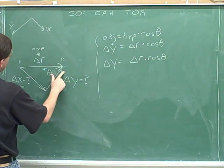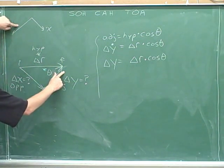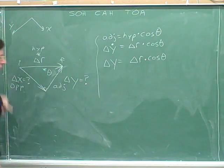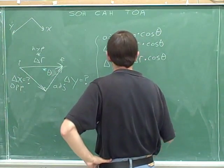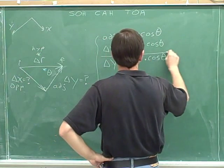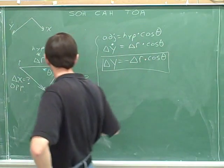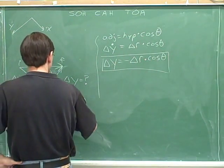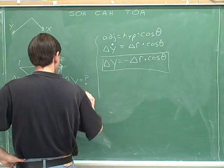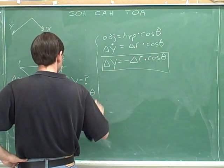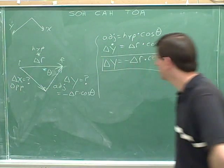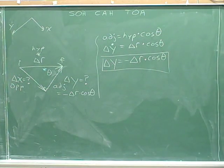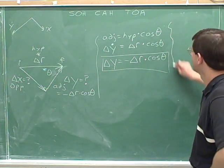Well, delta y we decided was pointing up and right, but the positive y-axis is pointing down and left. So delta y is pointing in the negative direction. Delta y is negative delta r cosine theta.